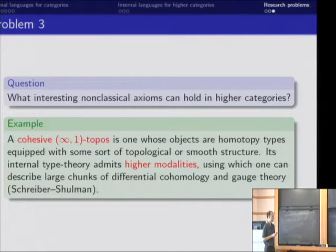There's this thing that he's invented, or he's just written down, called a cohesive (∞,1)-topos, building on work of Bill Lawvere. And this is a higher category whose objects are these homotopy types, which are equipped with additional sort of topological or smooth structure.